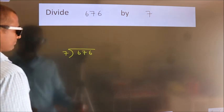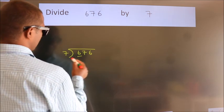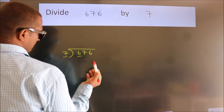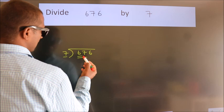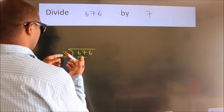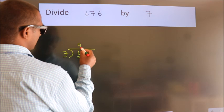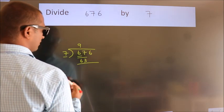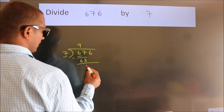Here we have 6. Here 7. 6 is smaller than 7, so we should take two numbers: 67. A number close to 67 in the 7 table is 7 times 9 equals 63. Now we should subtract. We get 4.